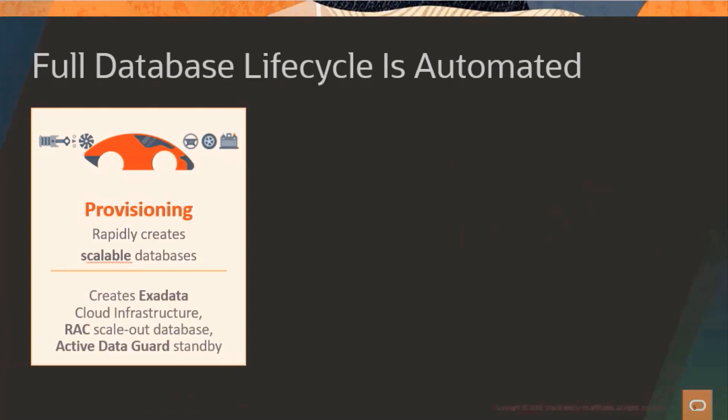When you provision an Autonomous Database, you get a mission-critical database which includes all of the advanced technologies previously mentioned. You get Exadata, and the operating system is created for you. The database is automatically created and it includes Active Data Guard, which creates a copy of your database in another region so you can recover in the event of a failure. So running an APEX application on Autonomous isn't just about saving time — it's an upgrade to mission-critical database features that we previously used to only find in large enterprises. But now, everyone has access to all of these innovative features.